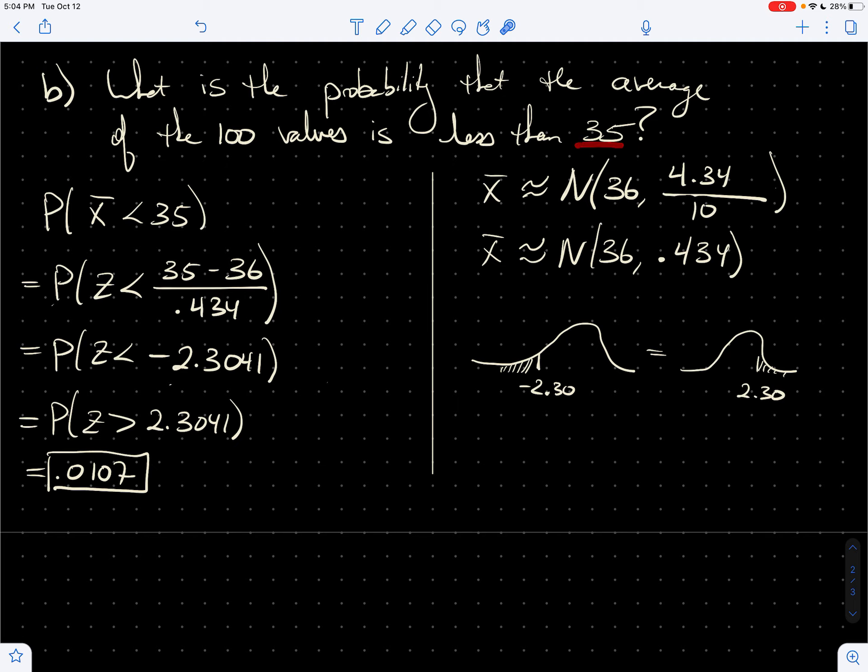So that's the probability that the average of 100 values is actually less than 35. And the reason why that's the case is the standard deviation is so small, right? We're looking at what's beyond more than two standard deviations away you know is going to be very, very small.